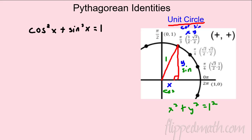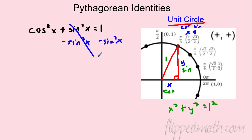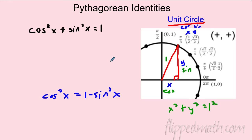Write that down and circle it — that is huge. Now let's manipulate it to build more identities. We can solve for cosine by subtracting sine squared from both sides, and we get: cosine² x = 1 − sine² x.